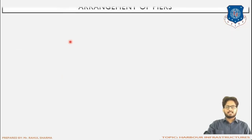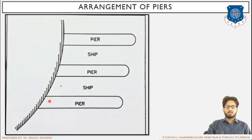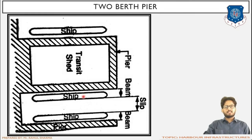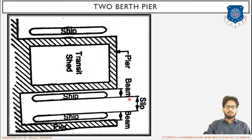For the arrangement of piers: three piers are shown perpendicular to the shoreline. Berthing can be done on both sides of the pier, and also on a single side for the first and third pier. The two-birth pier is shown with one ship on each side berthed simultaneously, hence the name 'two-birth pier.' The pier is the perpendicular structure to the shoreline.